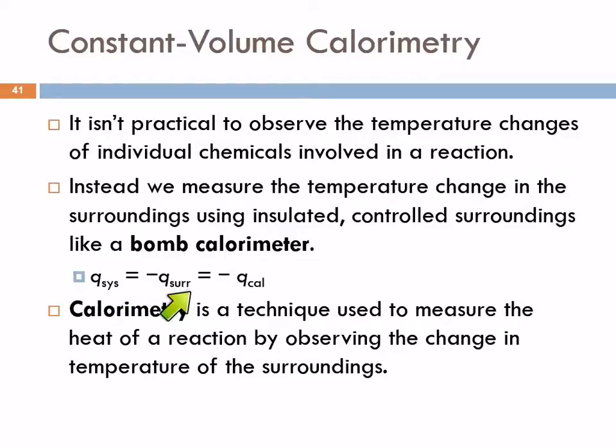The heat transfer for the system is going to be equal to but opposite in sign to the heat transfer for the surroundings. If the system loses heat, the surroundings gains the same amount of heat. In this type of experiment, the bomb calorimeter is the surroundings. Q for the system is equal to opposite in sign, the Q for the calorimeter. When we talk about calorimetry, that's just a technique used to measure heat of reaction by observing changes in temperatures in the surroundings. It's literally measuring calories, calorimetry.